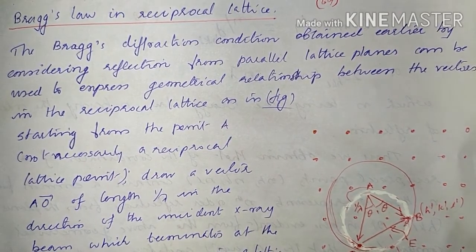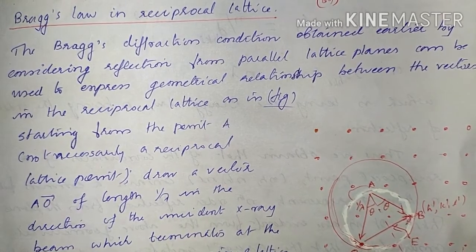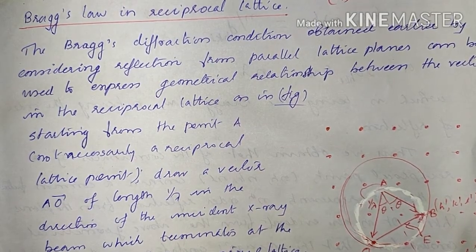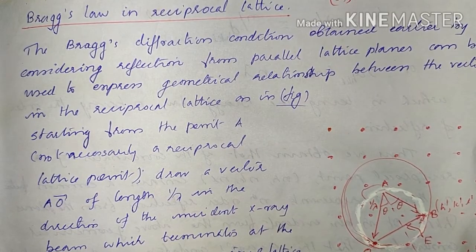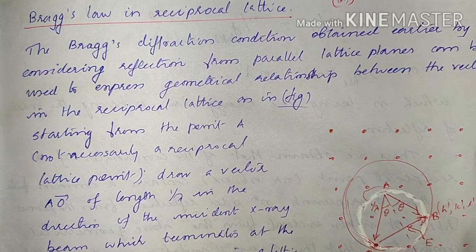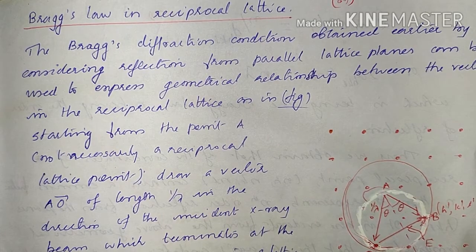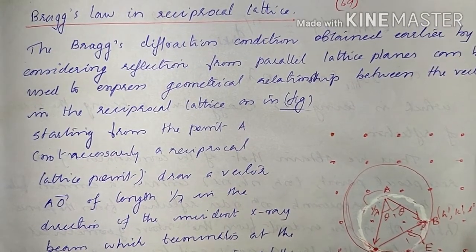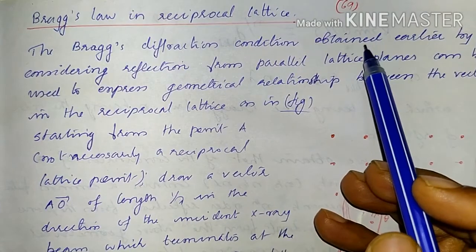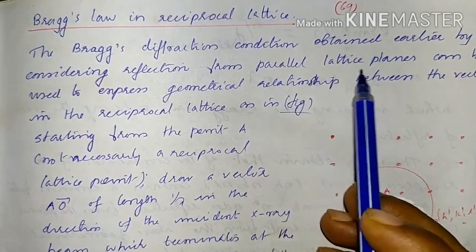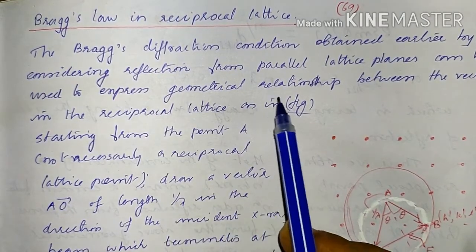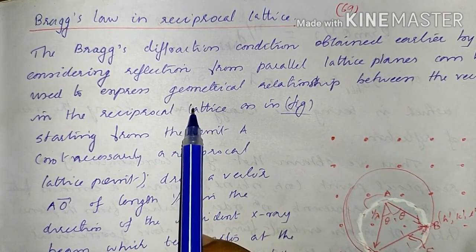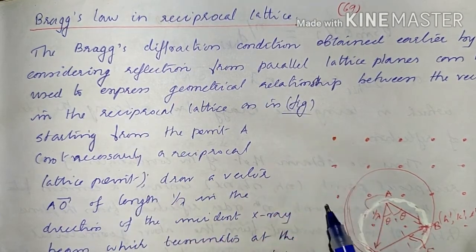You have studied Bragg's diffraction from a lattice. Bragg's law is 2d sinθ = nλ, where n is the order of reflection, d is the spacing between planes, and θ is the angle of reflection or scattering. We will now discuss Bragg's law in the context of the reciprocal lattice. The Bragg diffraction condition obtained by considering reflection from parallel lattice planes can be used to express the geometrical relationship between vectors in the reciprocal lattice.